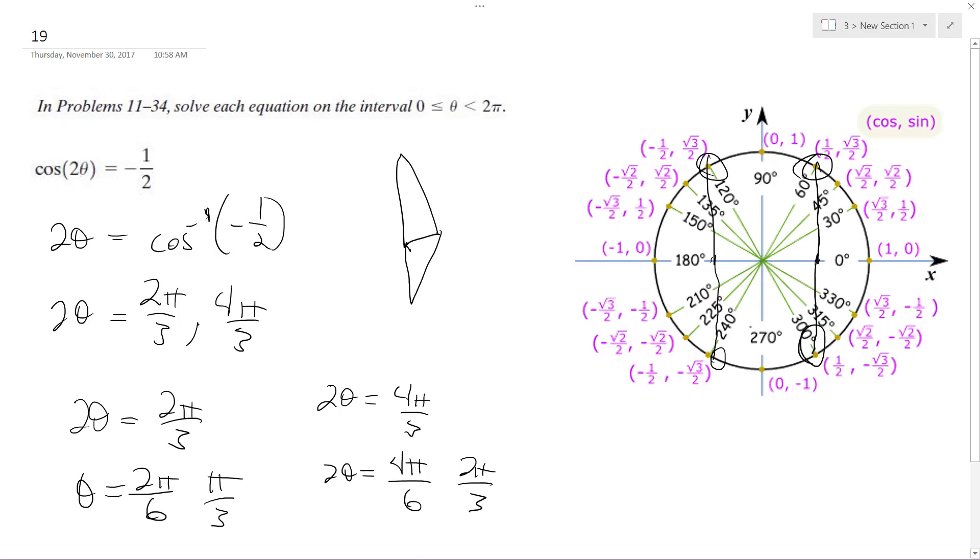And the reason why is because it has to be within the solution of zero to two pi, but these two angles here still give us the solution we need of negative one-half. So the official theta is going to be equal to pi over three, two pi over three, four pi over three, and five pi over three.